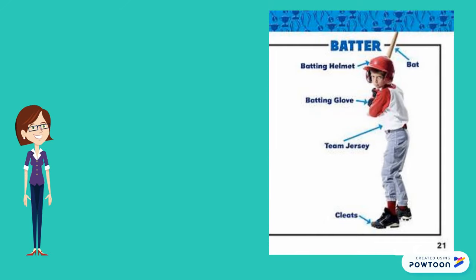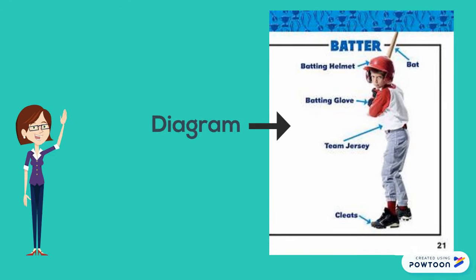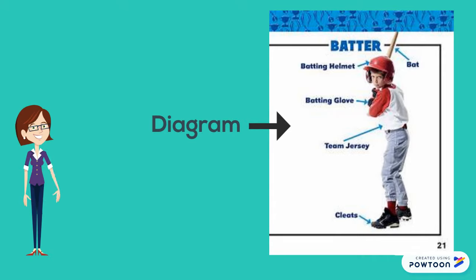Another text feature you might see are diagrams. The author will give you a diagram if they have a picture and they want to label the different parts of the picture so that you can better understand what they're talking about.